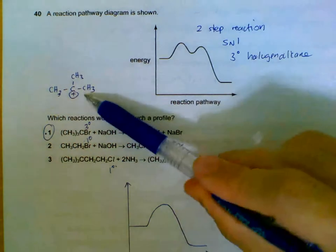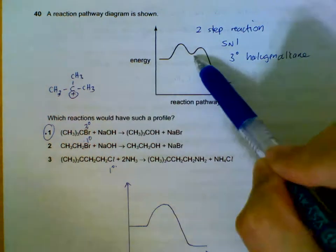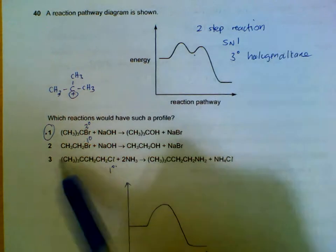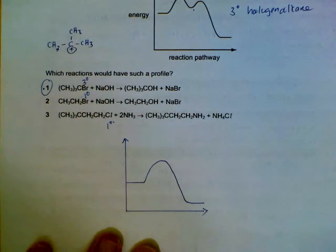The intermediate will be what I have drawn here. Intermediate can be found at this point in the valley. For statements 2 and 3, the pathway will be looking like this. A single hump showing an SN2 reaction.